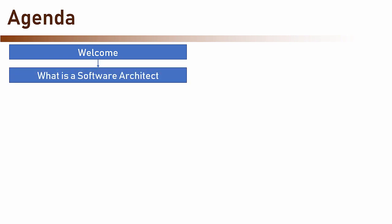Then we'll talk about the definition of a software architect. As we will see, there are several types of architect. We will describe some of them and then focus on the type that really interests us, the software architect.